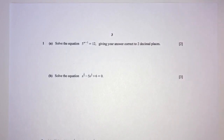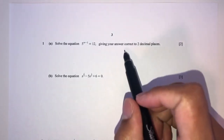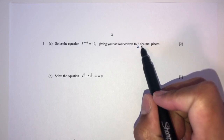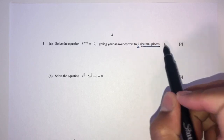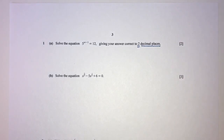Let's move on to question number 1. We have to solve the equation 5 to the power of (w minus 1) equals 12, giving your answers correct to 2 decimal places. You kind of know already your answer will not be exact because the question tells you to give your answer correct to 2 decimal places.